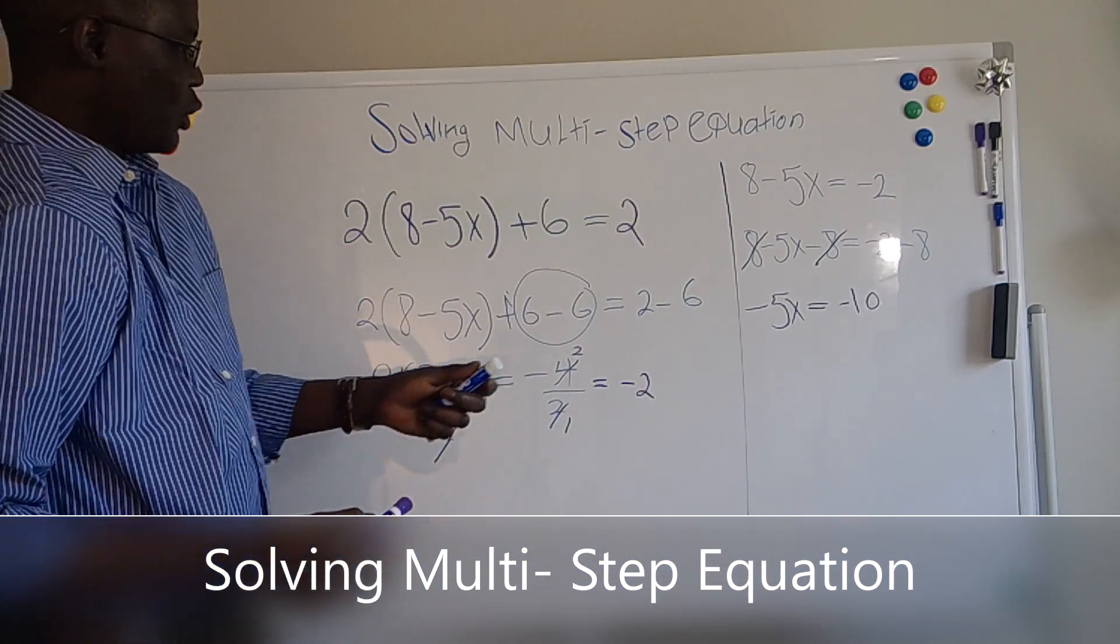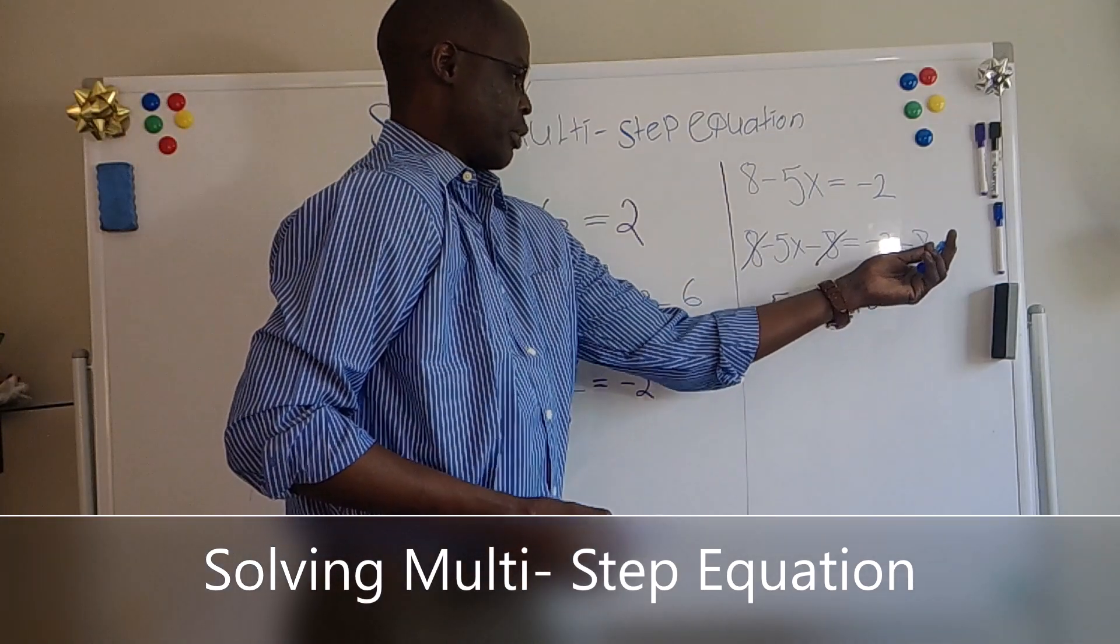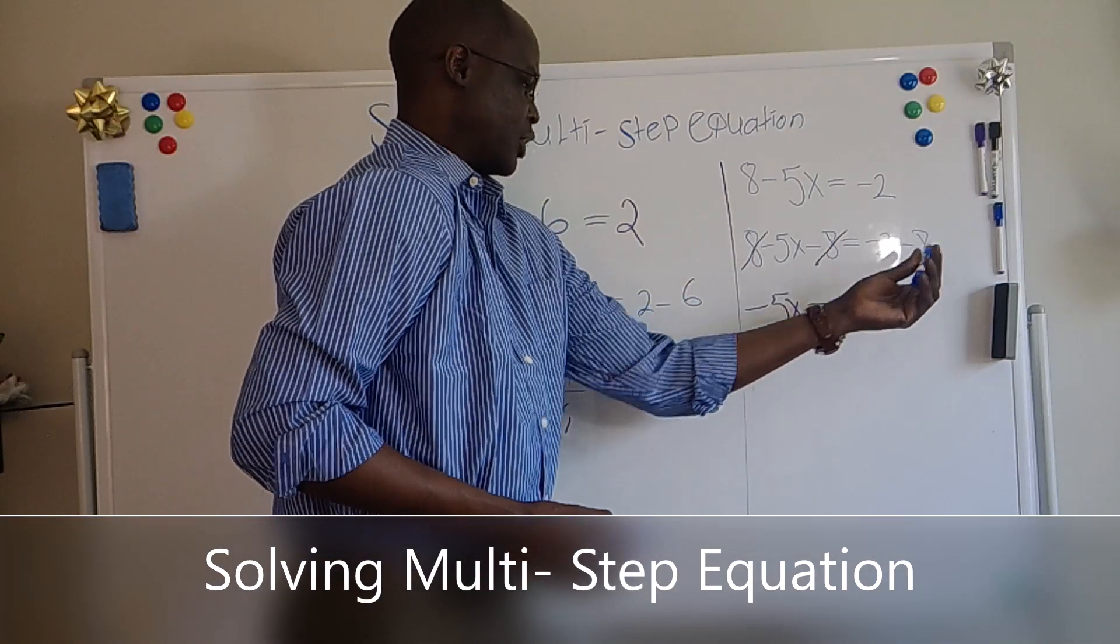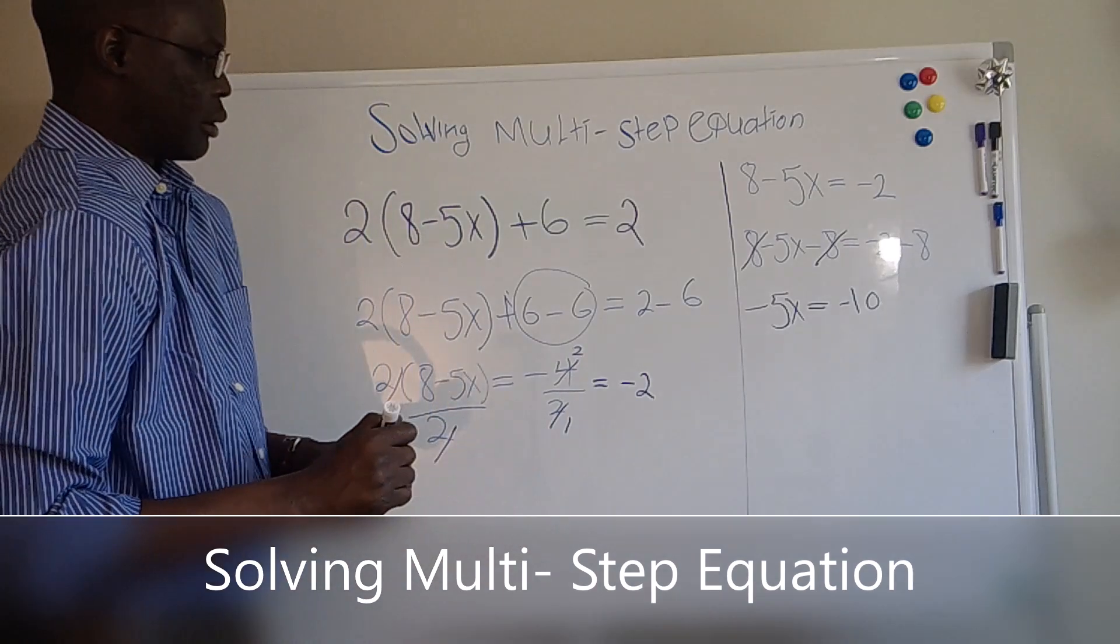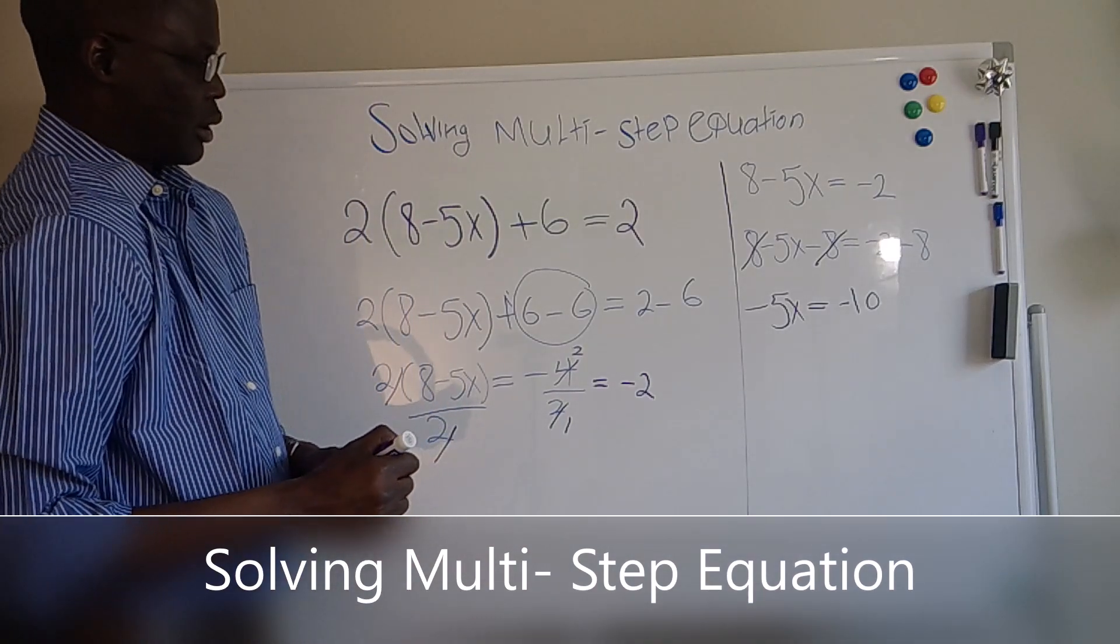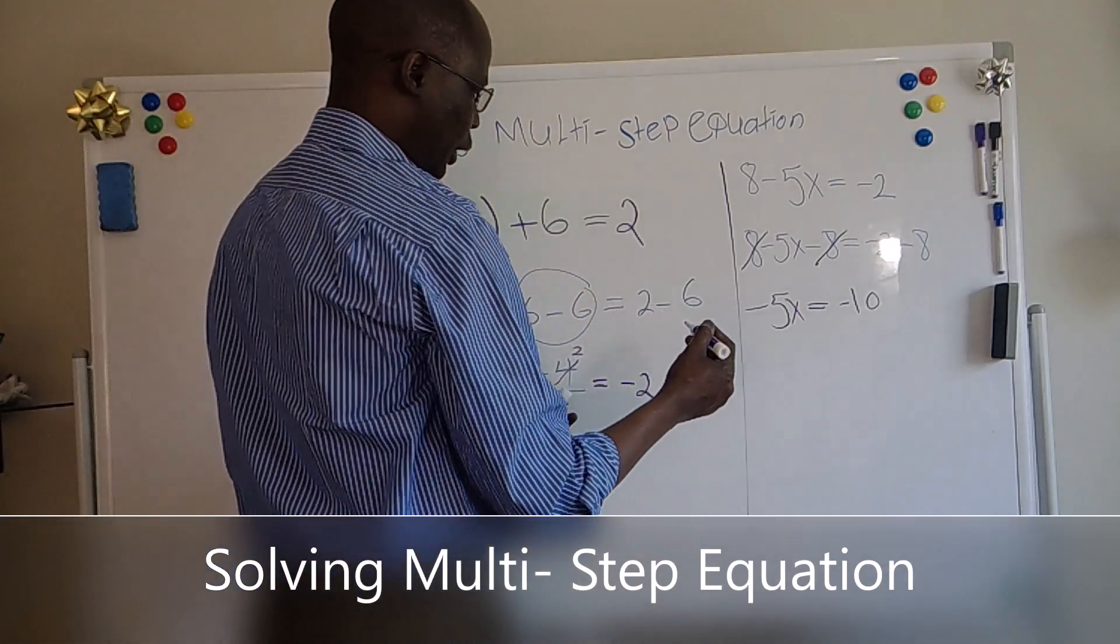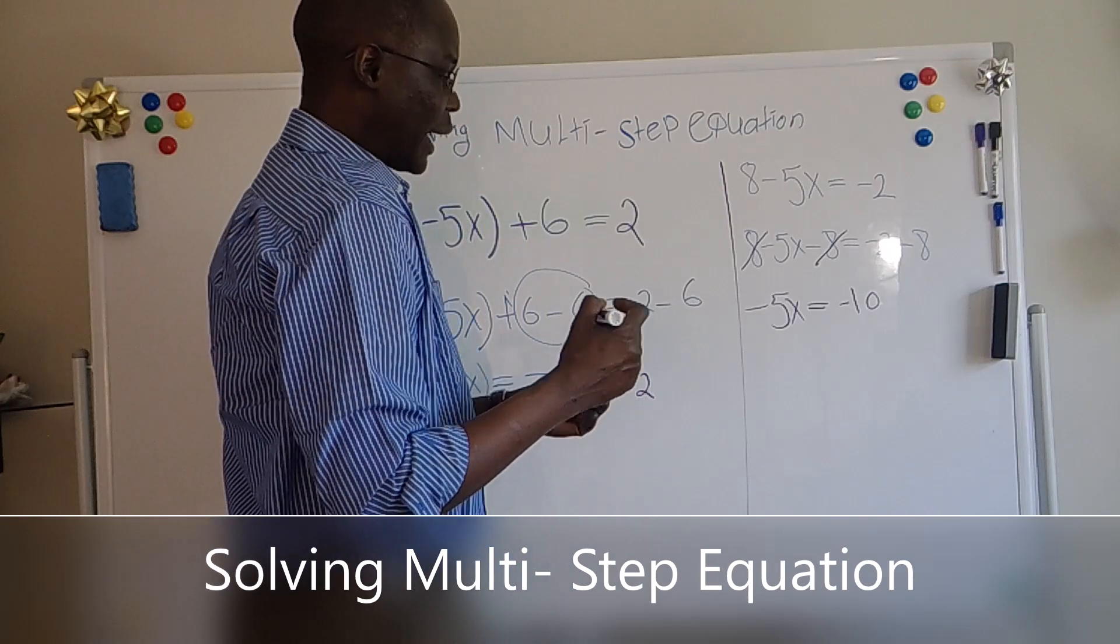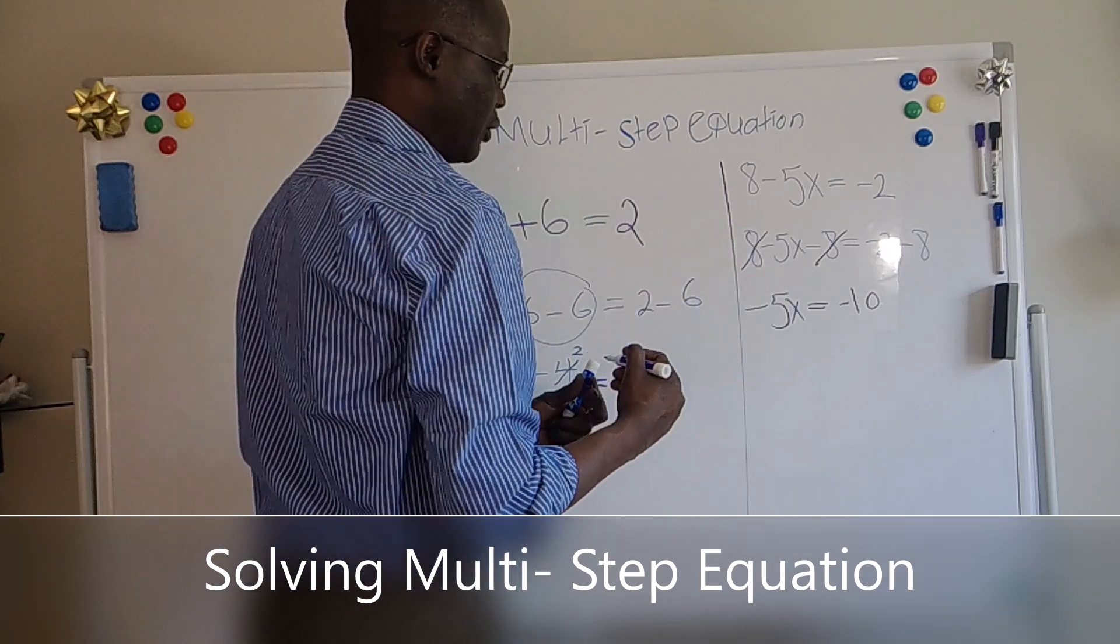How we get 10, because we have minus 8 plus minus 2, we get 10. The last step we have to do here is to divide with minus 5 both sides of the equation.